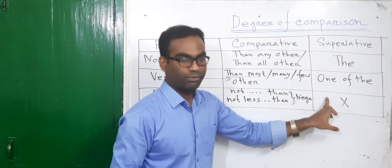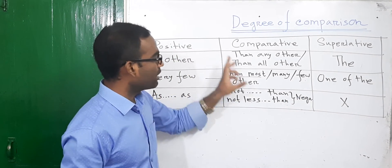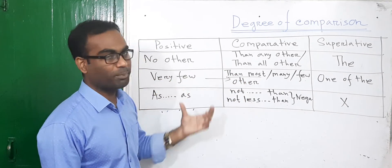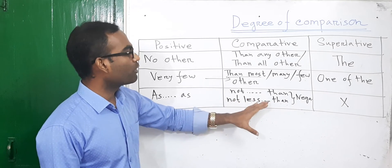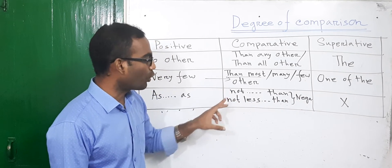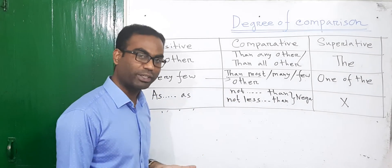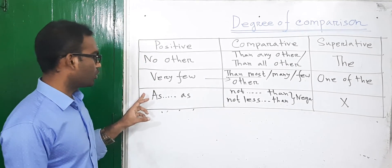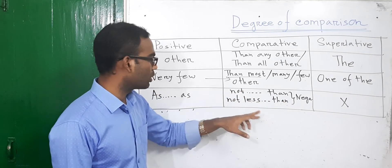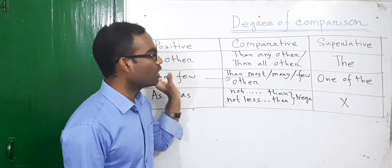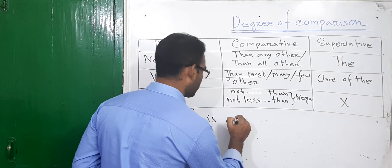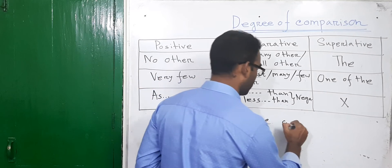English having a superlative meaning, so we will try to use a superlative form, we may use a comparative form. In the same way, I will try to set a comparative form where we will appear in a negative form. We use it as a negative form — 'not...than', 'not less than'. Example: 'He is as wise as...'